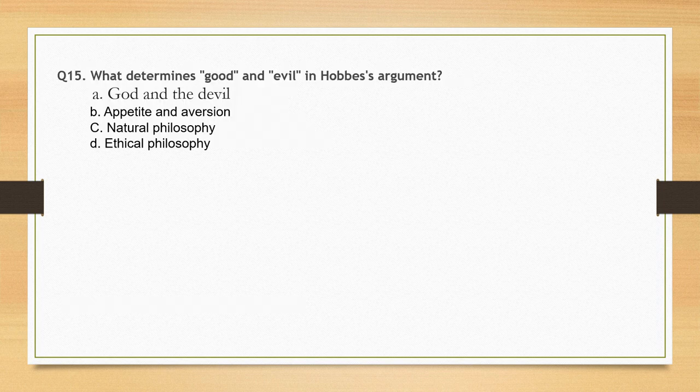What determines good and evil in Hobbes' argument? Options: God and devil; appetite and aversion; natural philosophy; ethical philosophy. The correct option is option B: appetite and aversion.